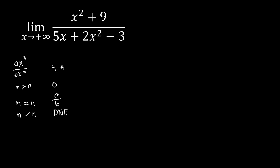To summarize the shortcut: if the denominator exponent is bigger, the limit is 0. If the exponents are equal, take the ratio of the leading coefficients directly. If the numerator exponent is bigger, evaluate the leading term to determine whether the limit is positive or negative infinity. For our example, the highest exponent in both the numerator and denominator is 2 — we have x squared in both — so they are equal.